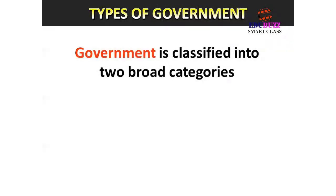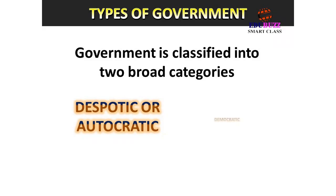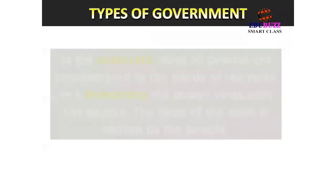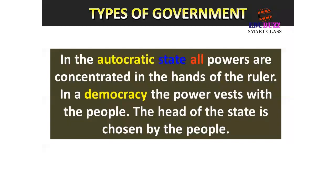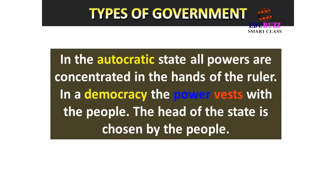Types of Government. Government is classified into two broad categories. In the autocratic state, all powers are concentrated in the hands of the ruler. In a democracy, the power vests with the people. The head of the state is chosen by the people.